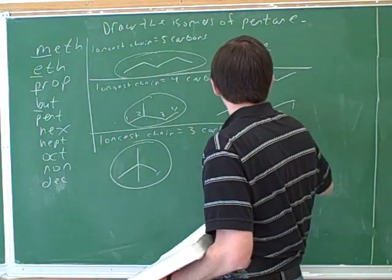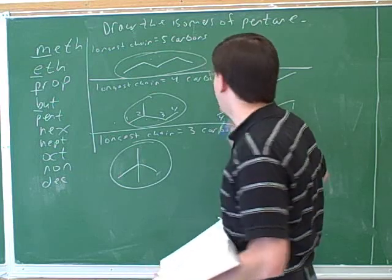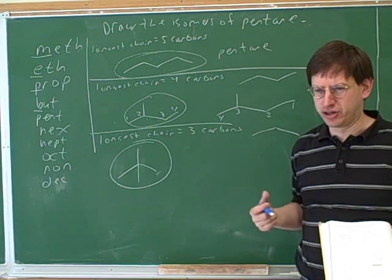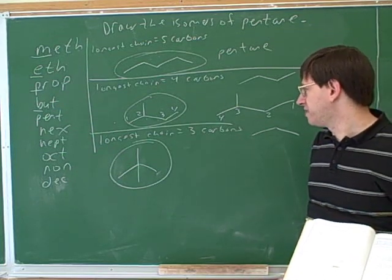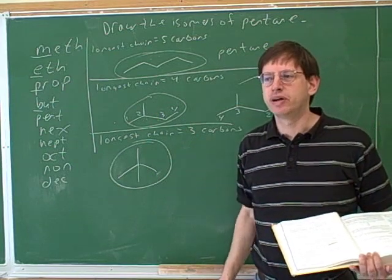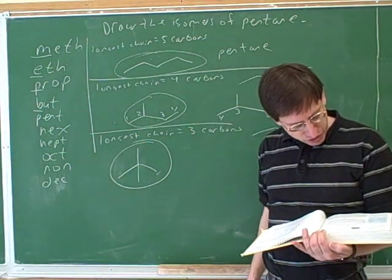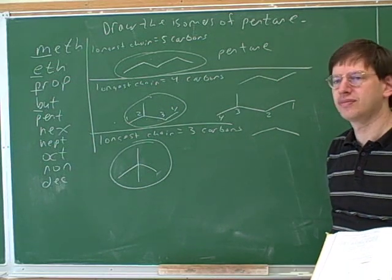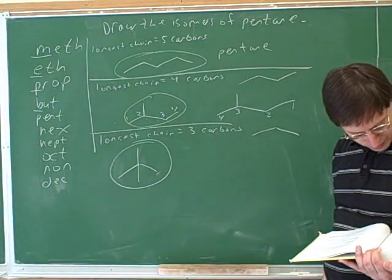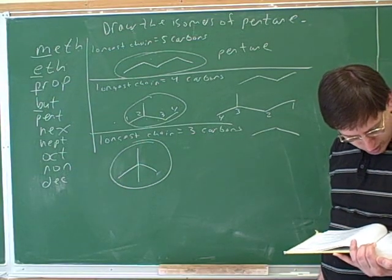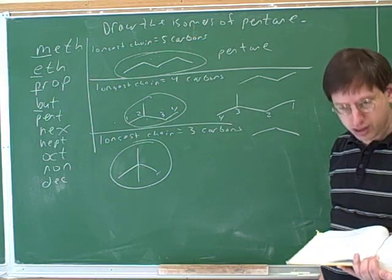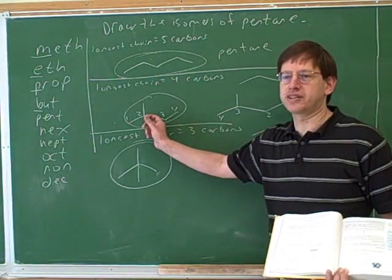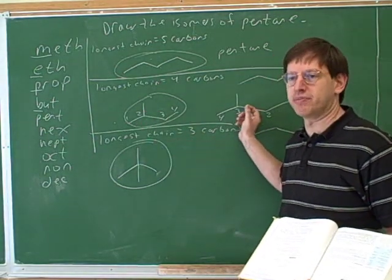Now theoretically, I could also have done the numbering the other way — I could have started from either the left or the right. One of the main things you're tested on is which direction you should number from. You want to choose numbers that give the substituent the lowest possible number. This direction is superior because it gives the substituent the number two, whereas the other direction gave the substituent the number three.